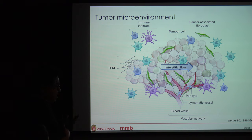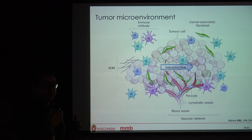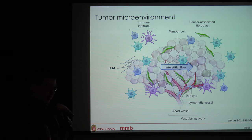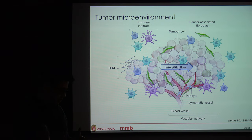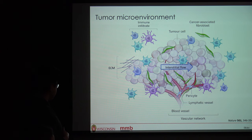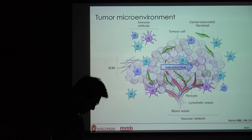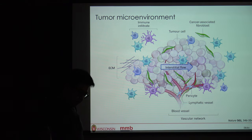Another tumor-associated collagen signature is fiber alignment. Typically, if you have more invasive tumors, you see a lot of perpendicular fibers — perpendicular to the margin of the tumor — suggesting they serve as line tracks for tumor cells to migrate along. So what I'm really focused on presenting today are those signatures: density and fiber alignment in particular, which can all be grouped under the broad term of mechanical confinement.